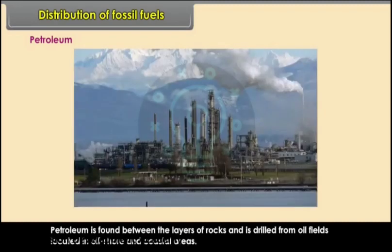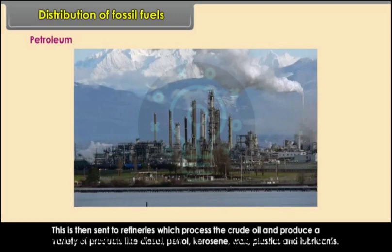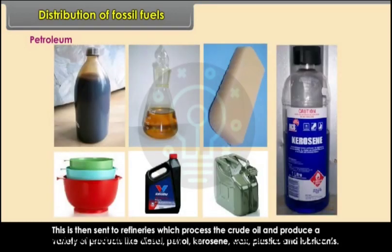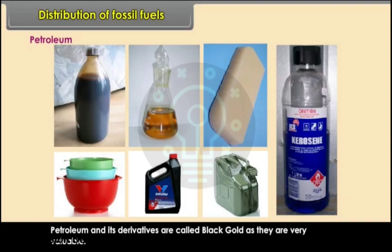Petroleum is found between the layers of rocks and is drilled from oil fields located in offshore and coastal areas. It is sent to refineries which process the crude oil and produce a variety of products like diesel, petrol, kerosene, wax, plastics and lubricants. Petroleum and its derivatives are called black gold as they are very valuable.